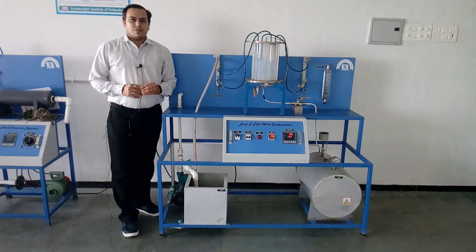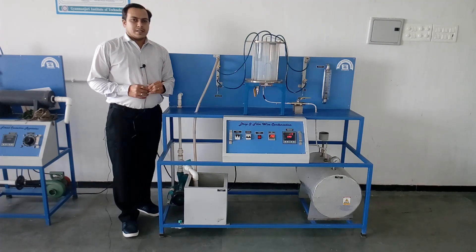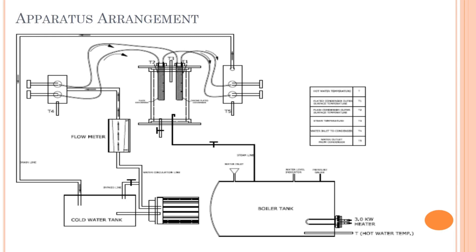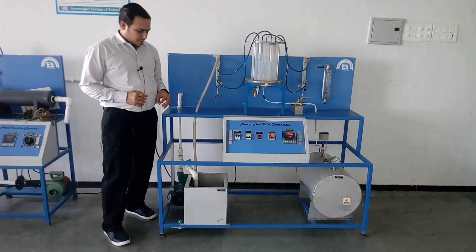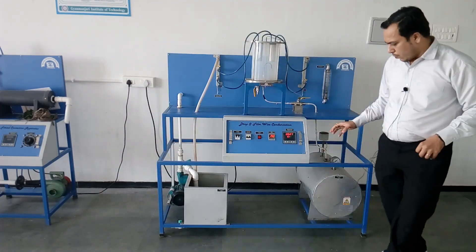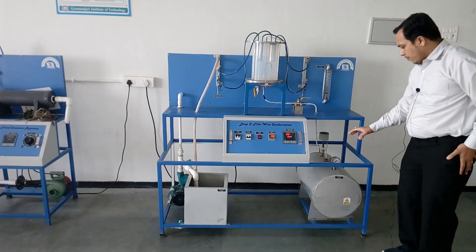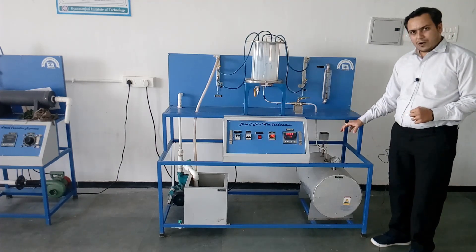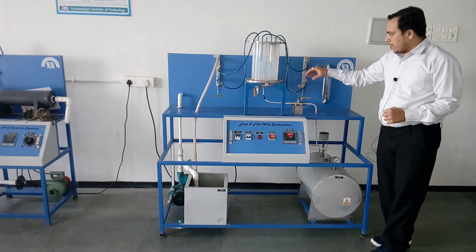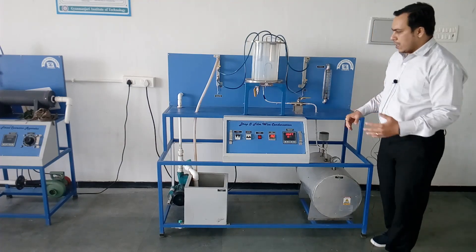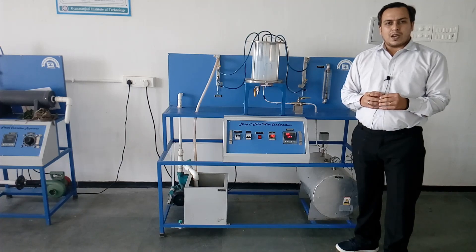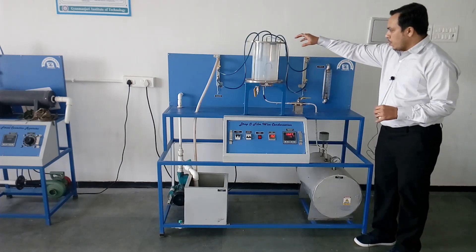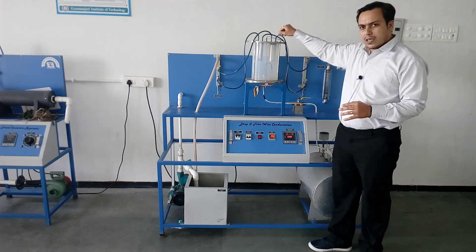Now we are going to analyze the apparatus arrangement. In this apparatus we have one heater chamber in which we fill the water, then we start the heater which is rated at three kilowatt. After a certain period of time we have steam formation, and that steam is transferred to the condensation chamber using a stop valve. For condensation we require a cooling medium, and here we are using water as the cooling media. We have one tank in which we fill the cooling water, which is circulated in both types of condensation elements.